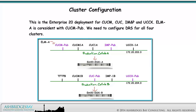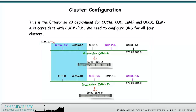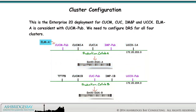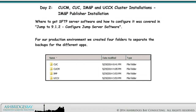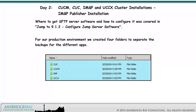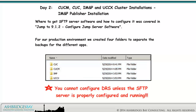This is the Enterprise 20 deployment for CUCM, CUC, IM&P, and UCCX. ELMA is co-resident with CUCM pub. We need to configure DRS for all four clusters. Where to get SFTP server software and how to configure it was covered in Jump Server 9.1.2 Configure Jump Server Software. For our production environment, we created four folders to separate the backups for the different apps. You cannot configure DRS unless the SFTP server is properly configured and running.